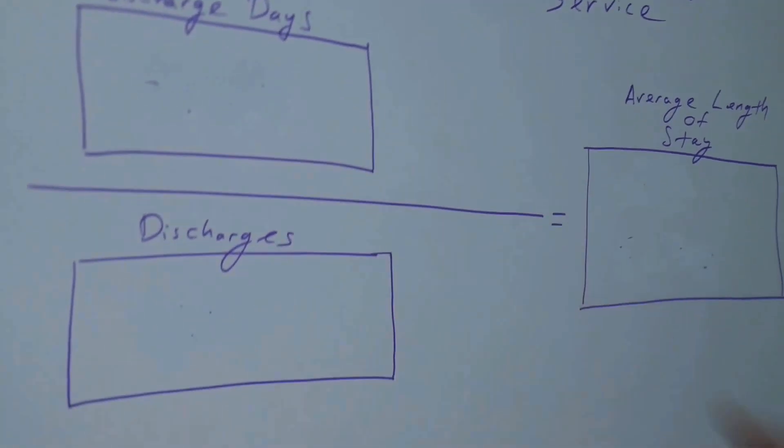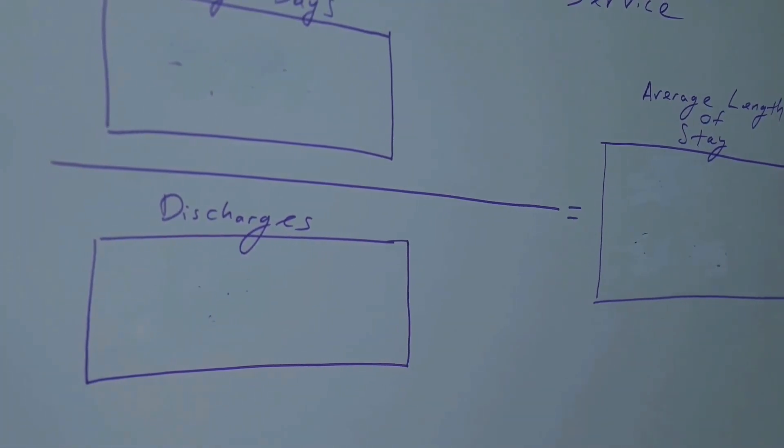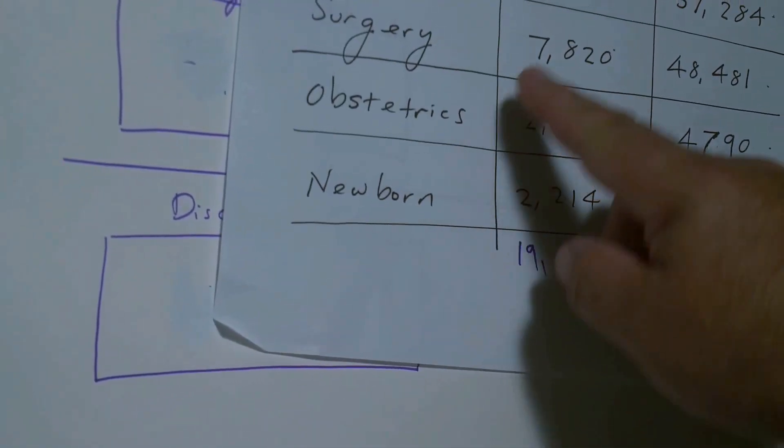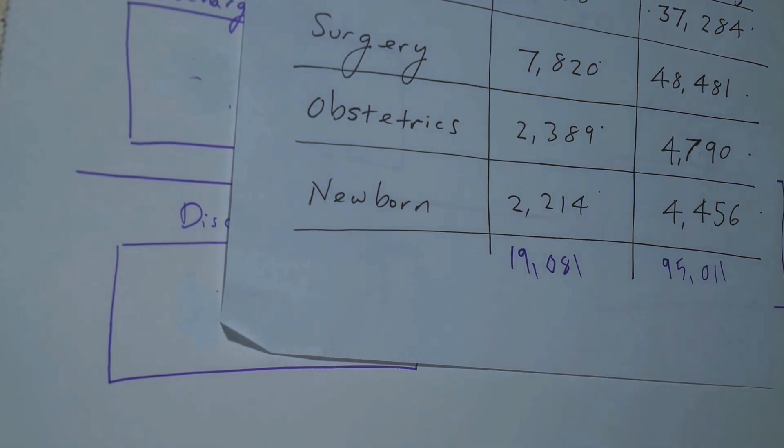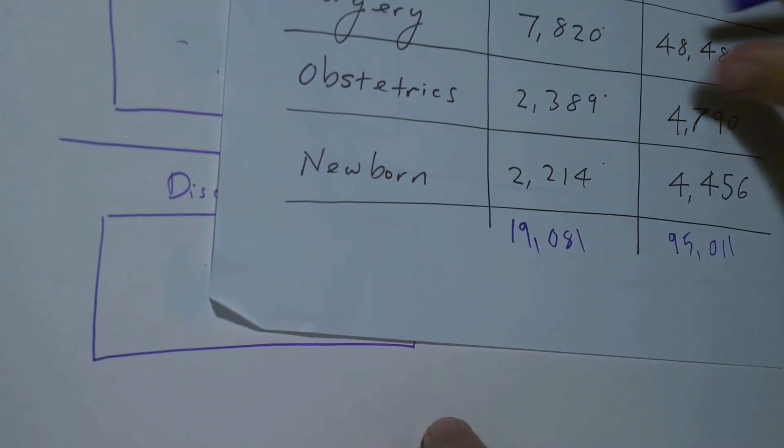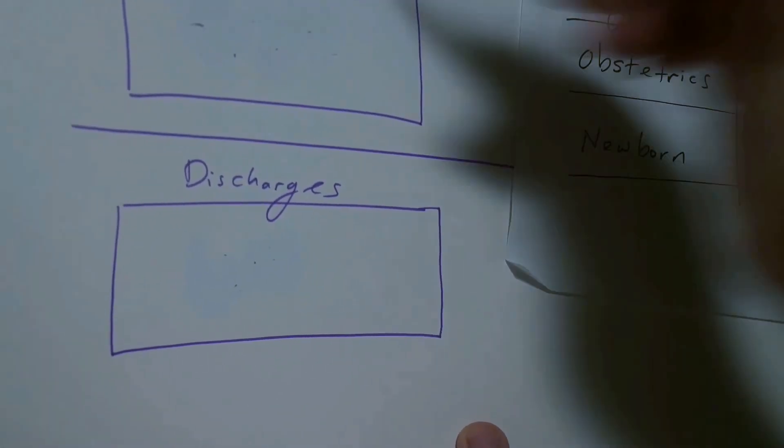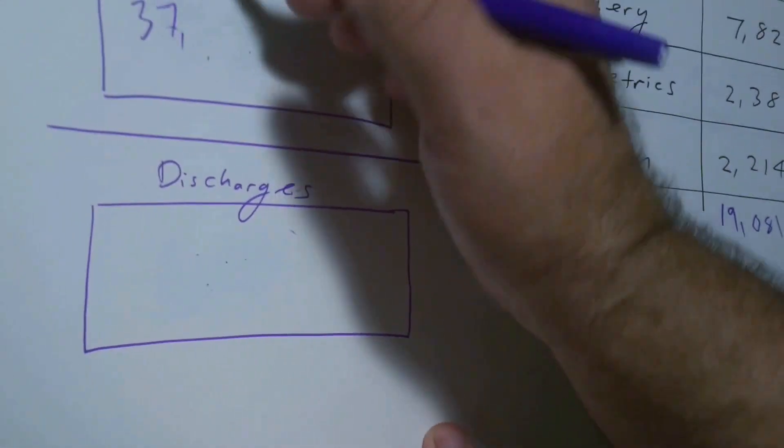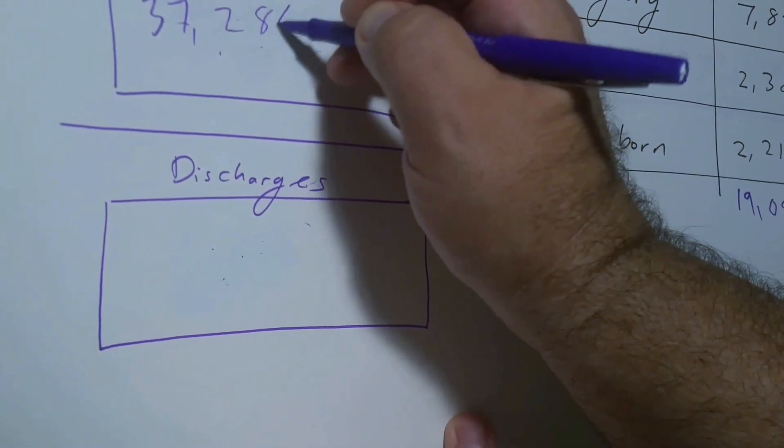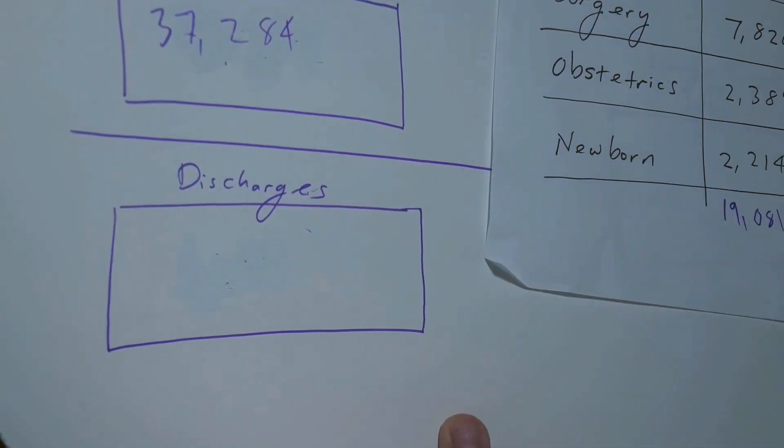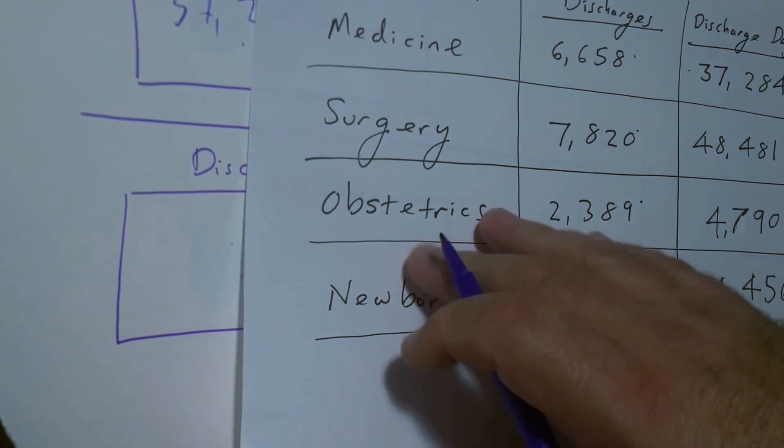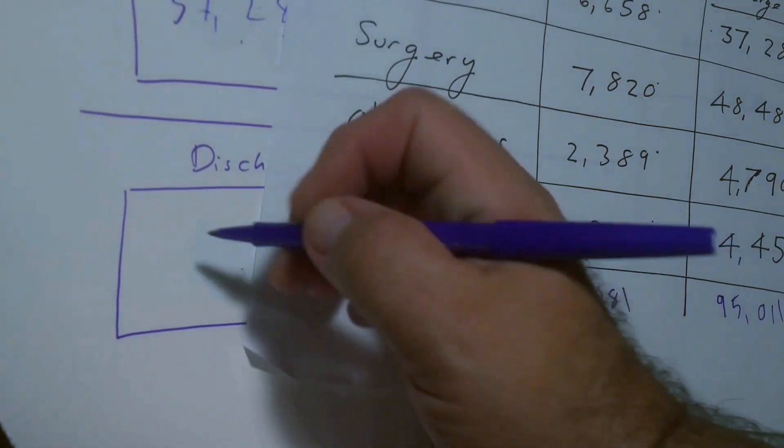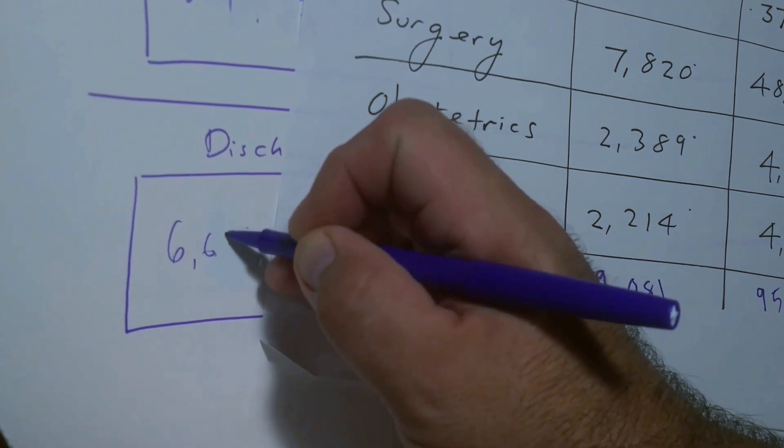We have the number of discharge days, and if I look back on our data, the number of discharge days for medicine is 37,284. So I'm going to go ahead and put that up here in the top: 37,284. And then the number of discharges for medicine is 6,658. So I'm going to put that here: 6,658.